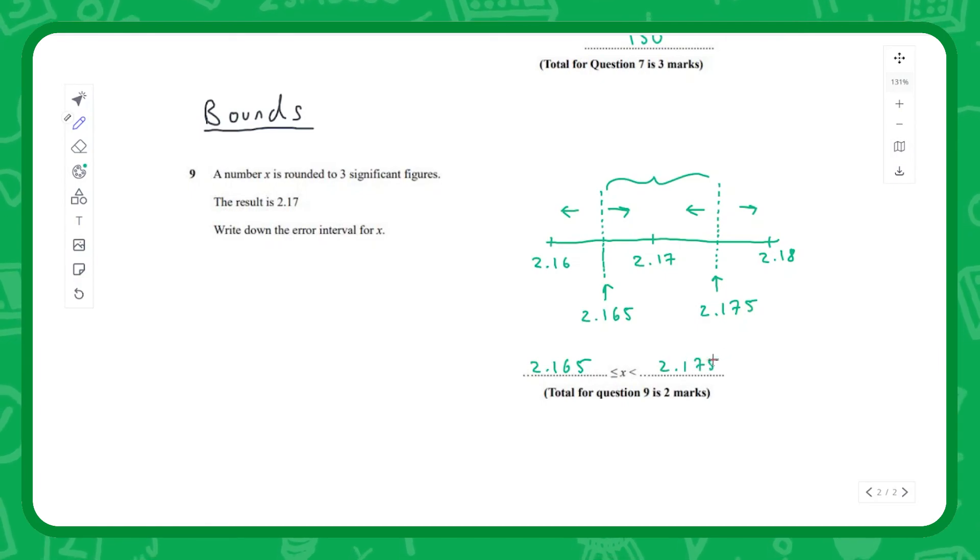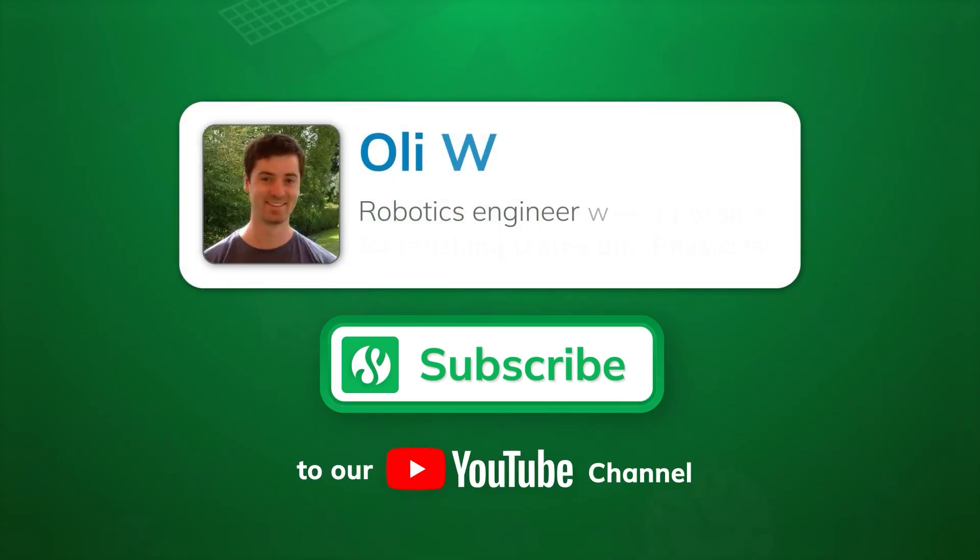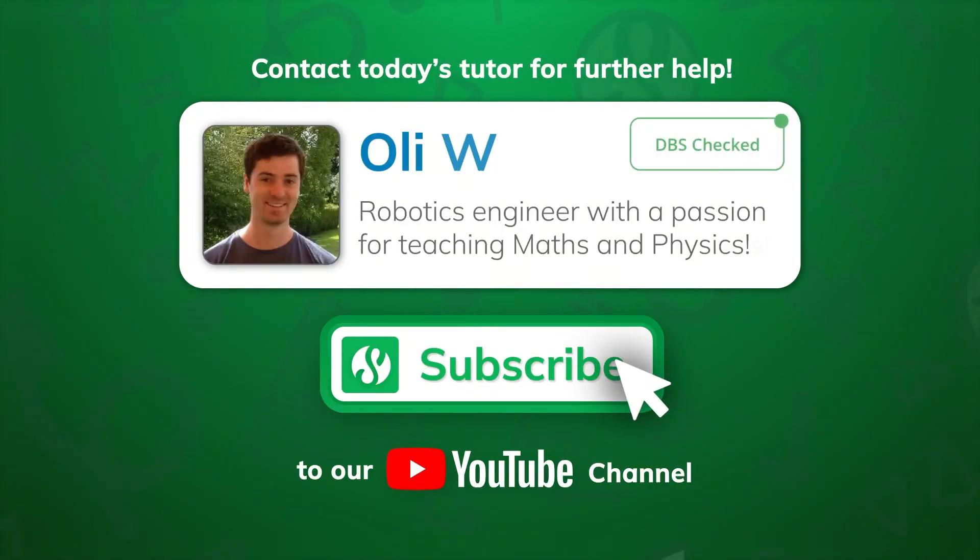And you can say, well if it's 2.175 wouldn't we round up, how can that be our final answer? Well, it's because we've got this inequality sign here which says we have to be less than whatever number is in this position. So it's going to be less than 2.175 - anything less than that we're going to round down to that 2.17 value. And that concludes our lesson on approximation.